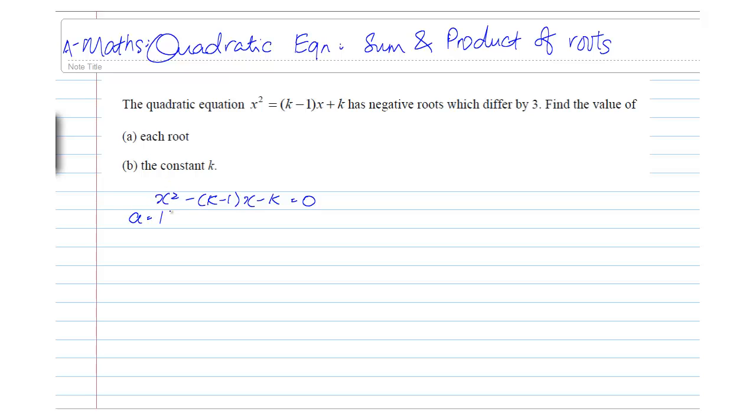A is the coefficient of x squared. B is the coefficient of x. And C is the constant.